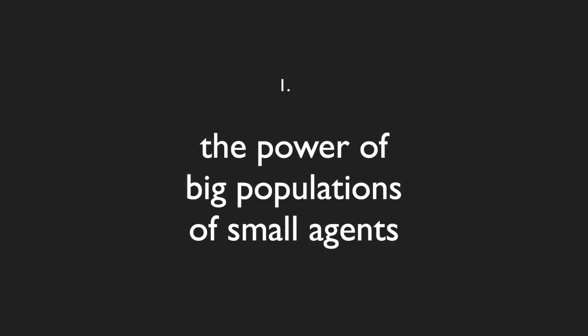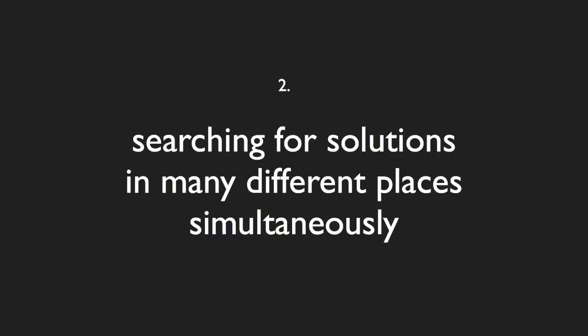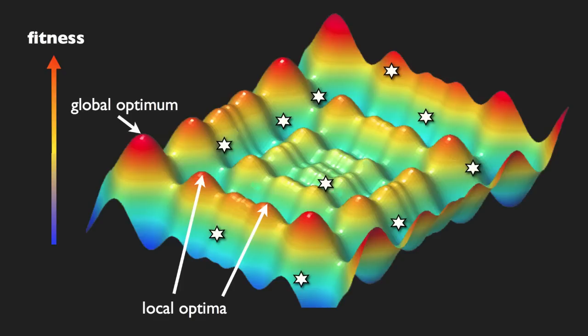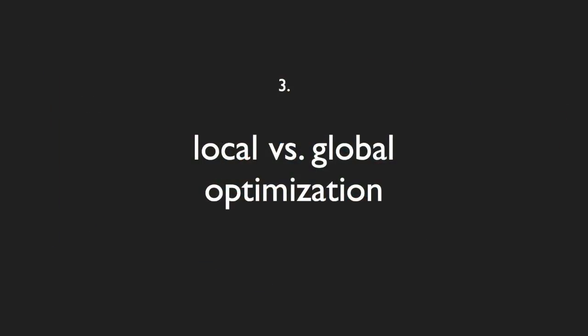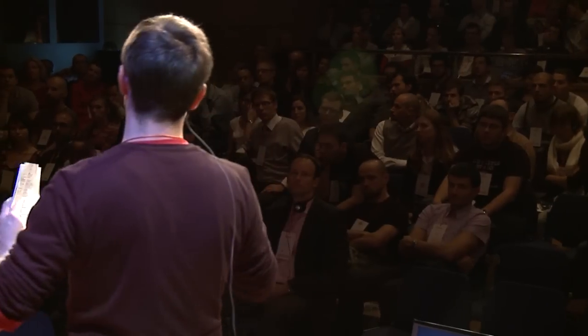By the way, today in China there are 15 million people studying the piano. Some day, of course, one of those must win a Chopin competition — this is a case of simple statistics. The power comes from searching for solutions in many different places simultaneously. Let's imagine the space of all possible solutions as a kind of map. The individuals stroll through this map; there are places of different fitness levels. In terms of optimization, we talk about the local and the global optimum.